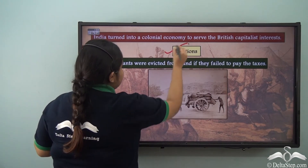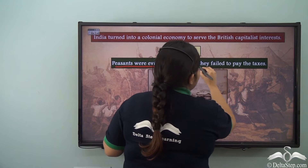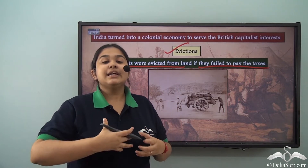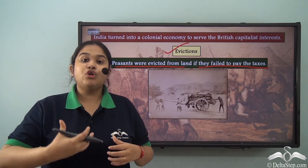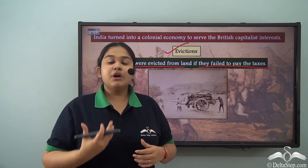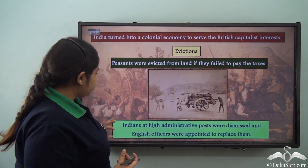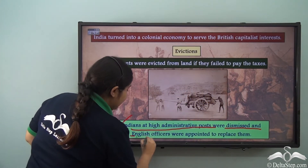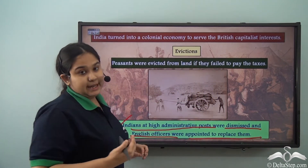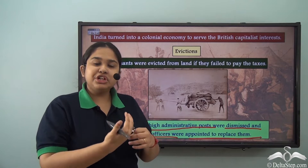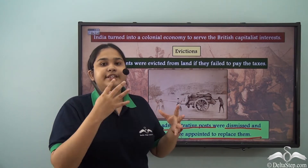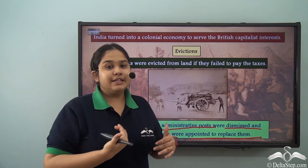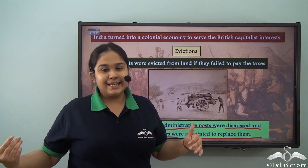Next we see the evictions that were done — peasants were evicted from the land if they failed to pay taxes. Not only were the peasants evicted, but Indian people who held official posts were also removed and English officials placed in their posts. Indians at high administrative positions were dismissed and English officers were appointed to replace them, capturing the economy India was generating and turning it towards Britain.